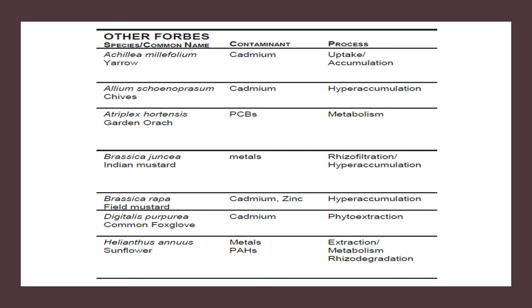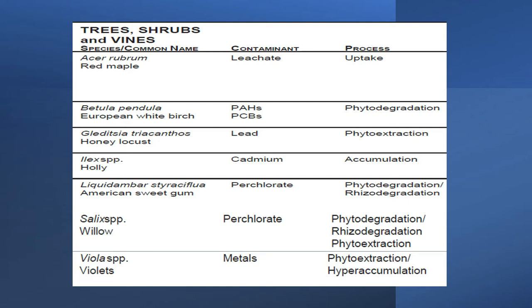Other useful plants include yarrow for cadmium, garden orach which degrades by metabolism, Brassica juncea for cadmium and metal rhizofiltration and accumulation, Indian mustard and field mustard for cadmium and zinc, common foxglove, and sunflower. Trees such as red maple, European white birch are used for polychlorinated biphenyls (PCBs) and polyaromatic hydrocarbons (PAHs).